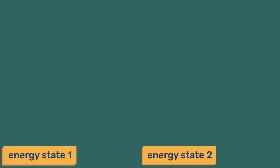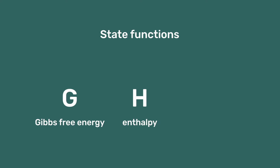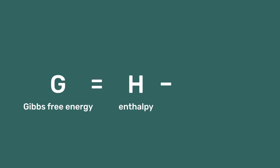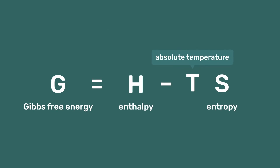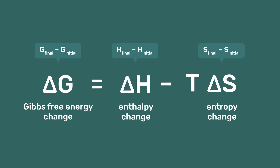To describe energy changes during a transformation, we introduce three important state functions: the Gibbs free energy G, the enthalpy H, and the entropy S. They are related by the equation G equals H minus TS. More specifically, we generally refer to changes of these properties between a final and an initial state, so we should write this as delta G equals delta H minus T delta S.